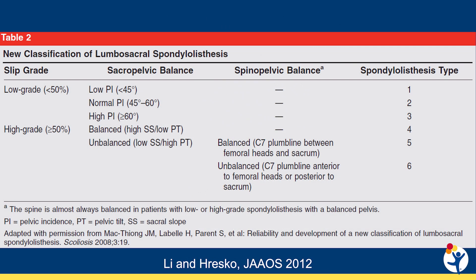The modern classification of spondylolisthesis incorporates these global sagittal parameters. Types 1 through 3 are low-grade slips differentiated based on the degree of pelvic incidence: type 1 being a low pelvic incidence less than 45 degrees, type 2 being normal pelvic incidence of 45 to 60 degrees, and type 3 being high pelvic incidence greater than 60 degrees.